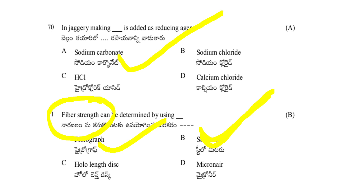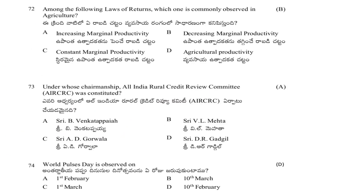Among the laws of returns, which one is commonly observed in agriculture? Options: increasing marginal productivity, decreasing marginal productivity, constant marginal productivity. The answer is decreasing marginal productivity — this is commonly observed in agriculture.